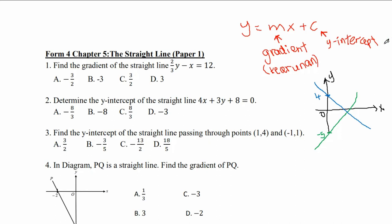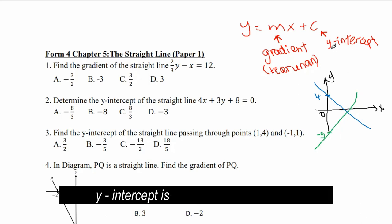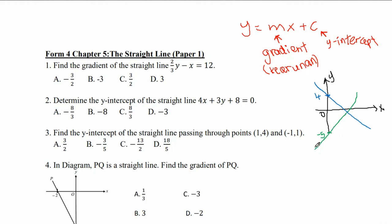So what is the meaning of y-intercept? Let's say this green line — this is a straight line. The y-intercept is the point that cuts at the y-axis. This point cuts at the y-axis, so this is the y-intercept for this green line. So the y-intercept will be negative 5. For this blue line, the y-intercept will be 4, because this blue line cuts the y-axis at 4.